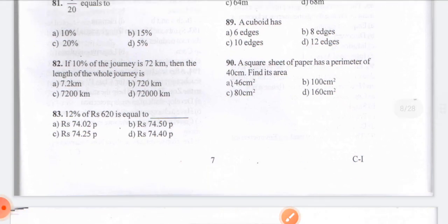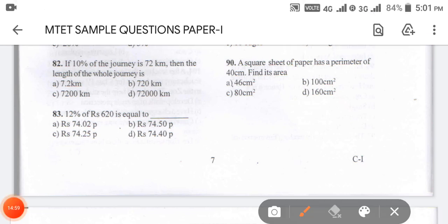Question number 82: if 10% of the journey is 72 km, then the length of the whole journey is? Take X as the total journey. So 10% of X is 72. After doing the calculation, the answer for question number 82 is 720 km.